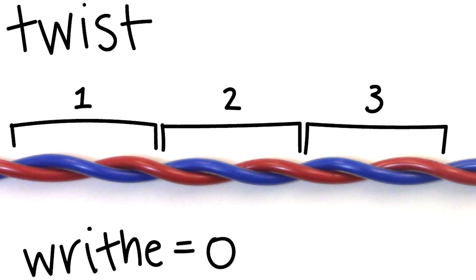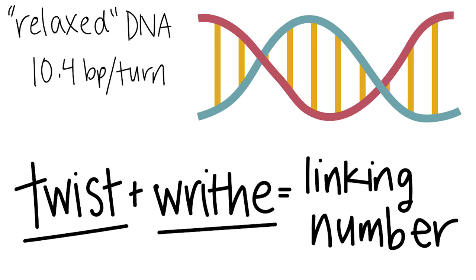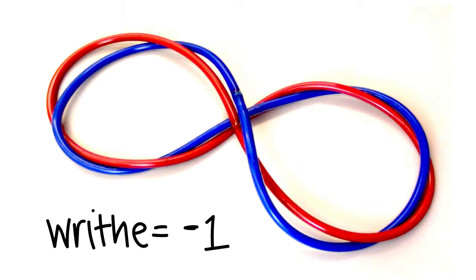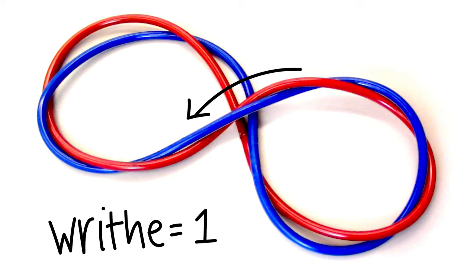There is zero writhe in this example. The writhe is described as how many times the double helix crosses over itself, and is positive or negative depending on the orientation. For example, this circular DNA has a writhe of negative one, because it follows the right-hand rule and the upper strand travels left to right, and this circular DNA has a writhe of one. Both of these examples also have twists.